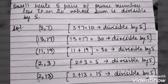2 plus 3, again it is 5 and it is divisible by 5. 2 plus 13, it is 15 and the answer is divisible by 5. So here we have 5 pairs of prime numbers which are less than 20 and whose sum is divisible by 5.